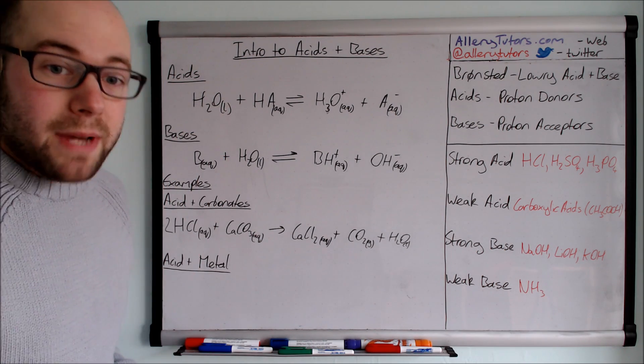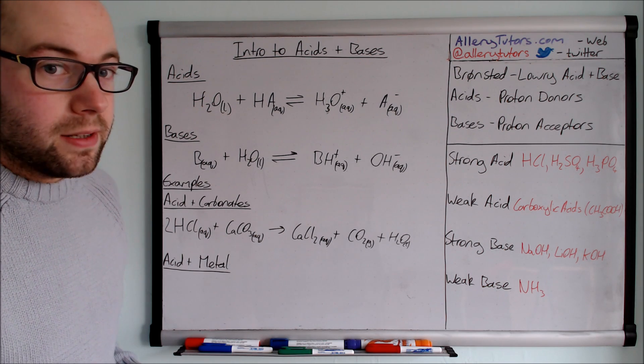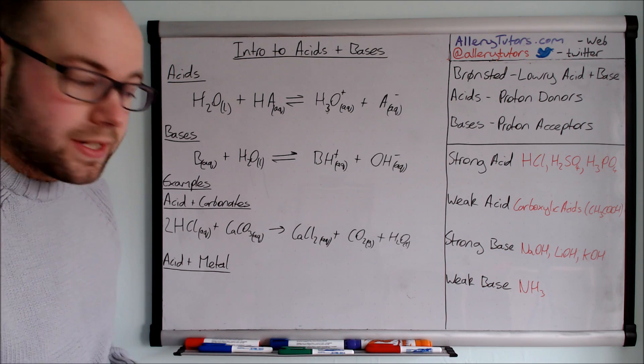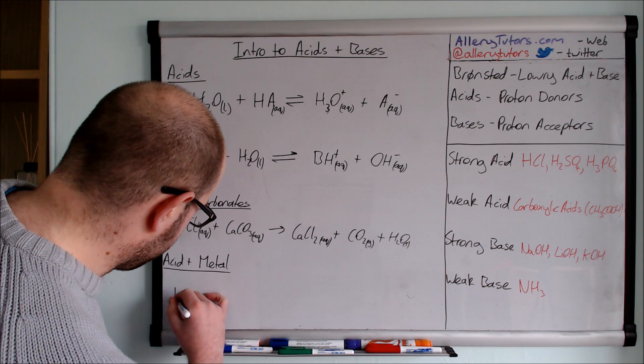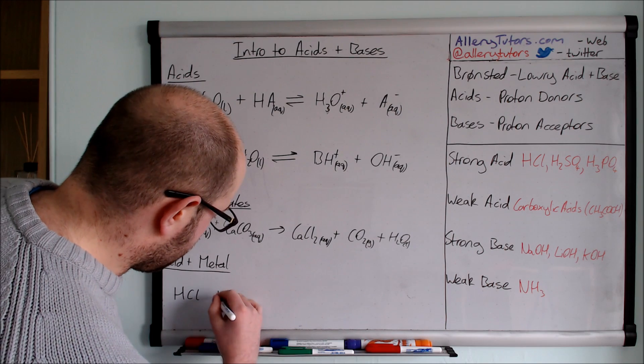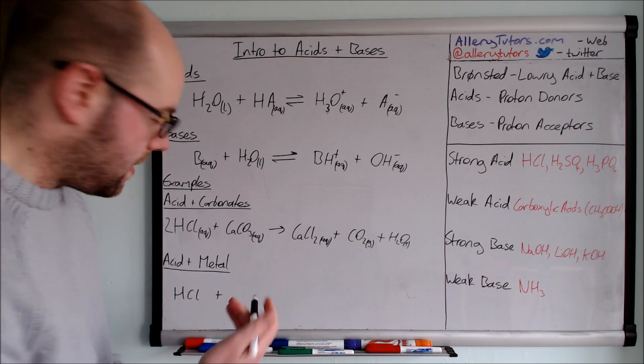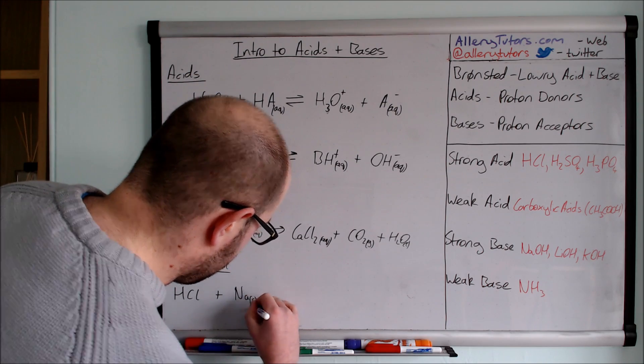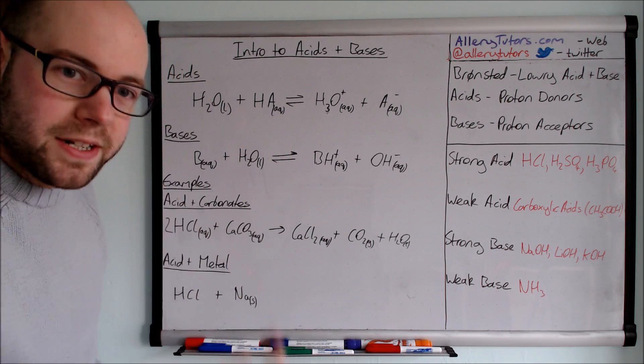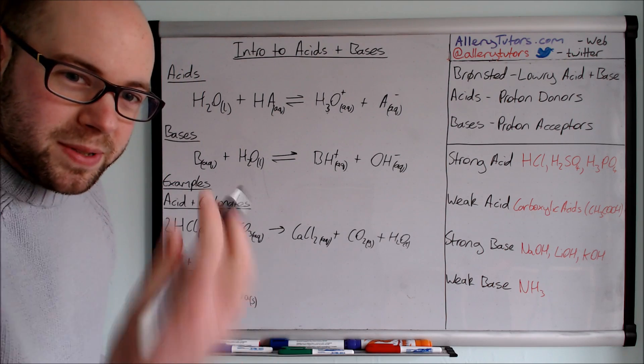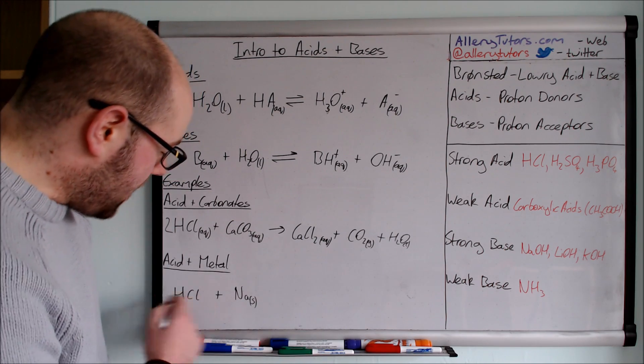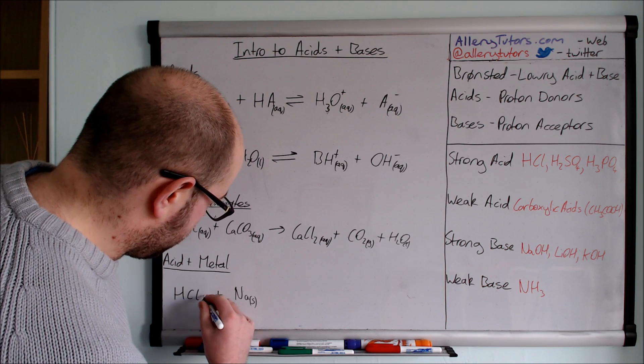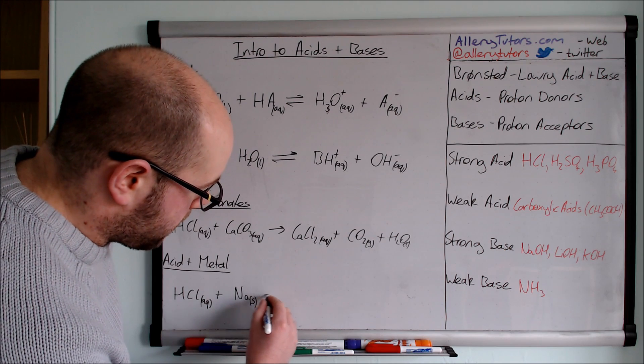Next one, acid and metal. So acid plus metal gives salt plus hydrogen gas. So again we're going to go through a specific example. We'll use HCl again. So HCl, and we're going to react it with let's say sodium metal. Sodium is that really soft metal. You put it in water, it blows up and it catches fire and everything. So it fizzes and spins around on the top. And hydrochloric acid is aqueous because it's dissolved in solution.